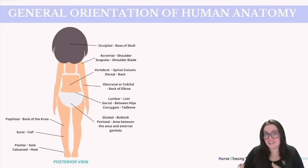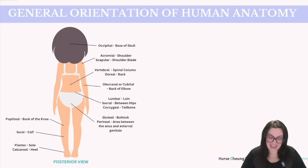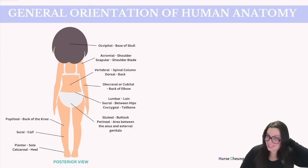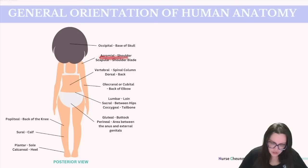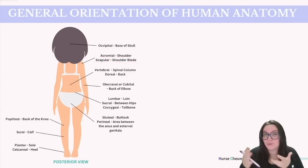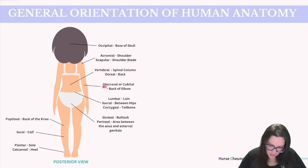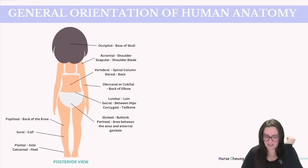Now that we covered everything on the anterior side, we want to cover everything on the posterior side, which is just a fancy way of saying our back. Starting at the top, we have the occipital, which is the base of our skull; acromial, which is our shoulder; scapular, which is our shoulder blade; vertebral, which is the spinal column; dorsal, which is our back; and olecranon or cubital, which is the back of our elbow.